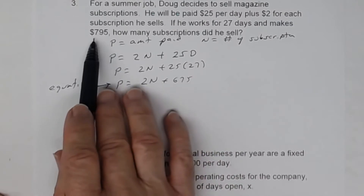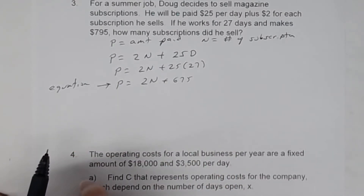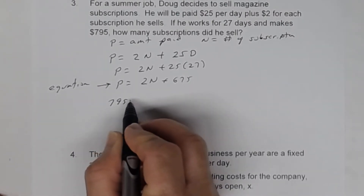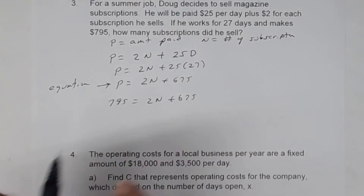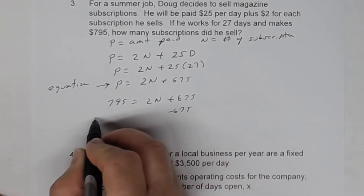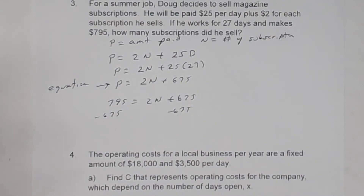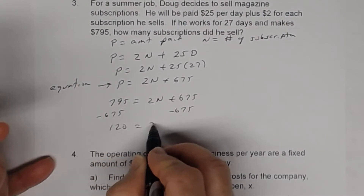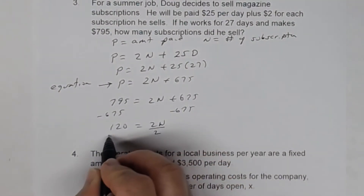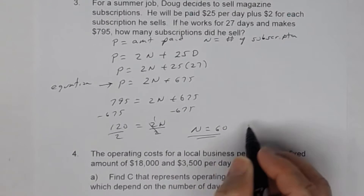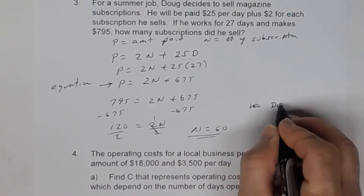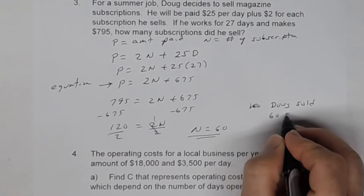Now they want to know: if he makes $795, how many subscriptions did he sell? We're going to let P equal $795. So 795 equals 2N plus 675, and all we have to do is solve for N. Let's subtract 675 from both sides: 795 minus 675 equals 120, so 120 equals 2N. Divide both sides by 2. The number of subscriptions is going to be 60 — Doug sold 60 subscriptions.